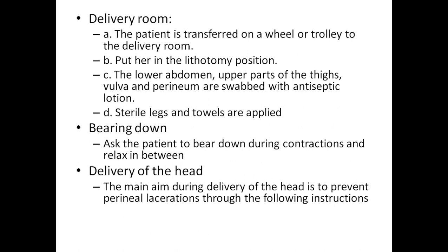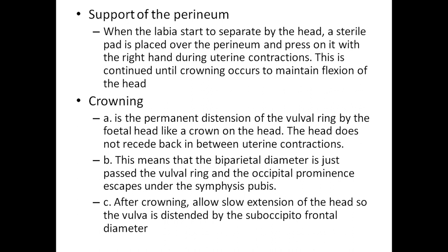The main aim of delivery of the head is to prevent perineal lacerations. First: support of the perineum — when the labia start to separate by the head, a sterile pad is placed over the perineum and pressed on it with the right hand during uterine contractions, continued until crowning occurs, to maintain flexion of the head. Crowning is the permanent distension of the vulval ring by the fetal head. After crowning, slow extension of the head is allowed so that the vulva is distended by the sub-occipito-frontal diameter.